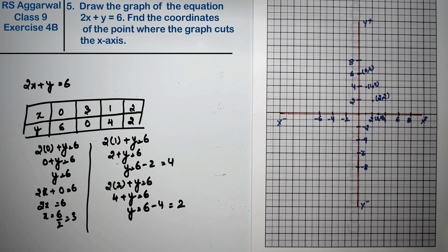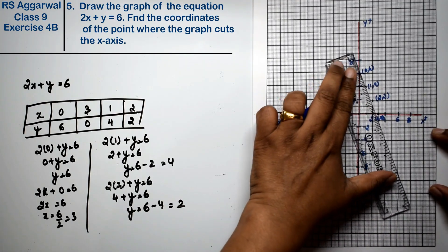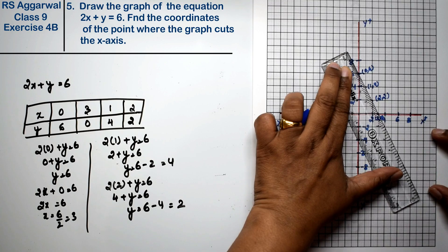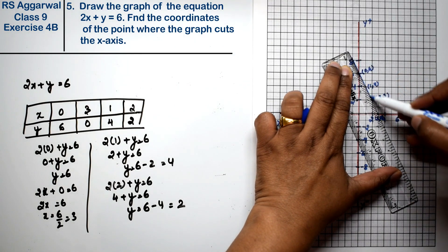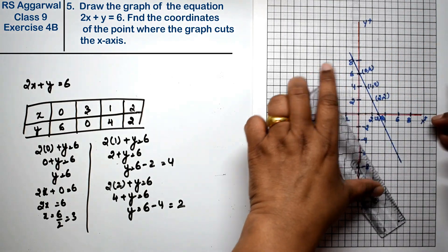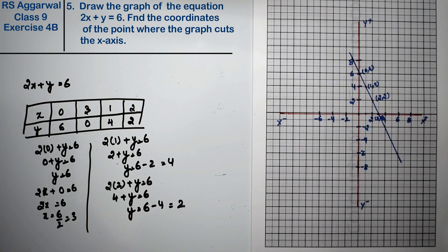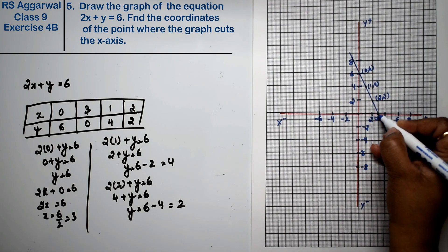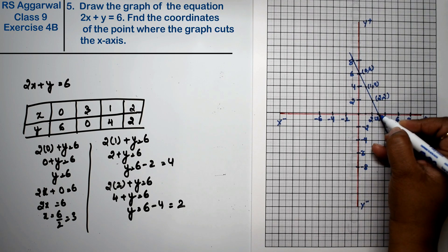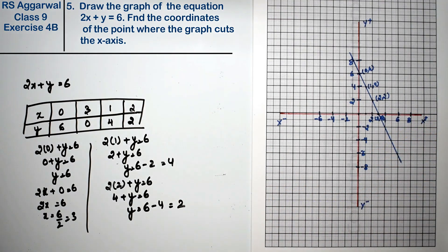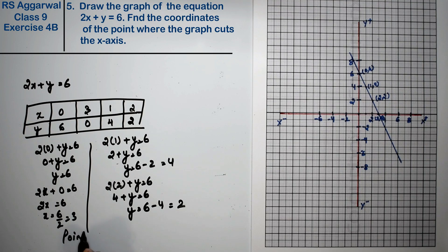Now we will draw a line through these points. The question asks us to find the coordinates of the point where the graph cuts the x-axis. This is the point where x is 3 and y is 0. So the answer is the point (3, 0).